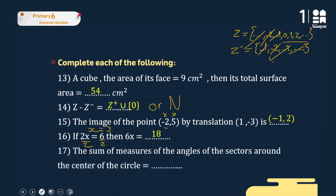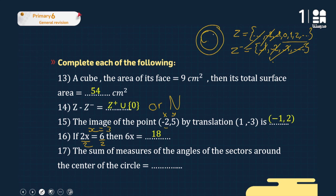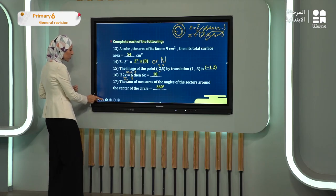Exercise seventeen: the sum of the measures of the angles of the sectors around the center of a circle equals 360 degrees.